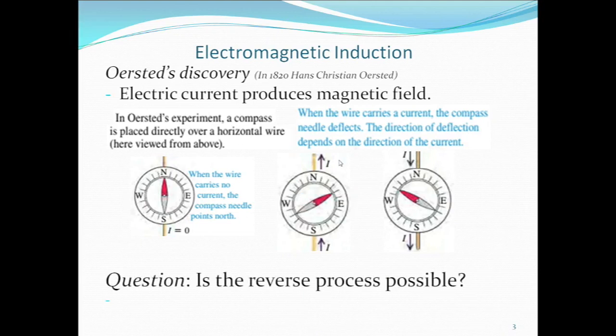The question is: is the reverse process possible? This will take us to our today's discussion. Is it possible for electric current to be produced by a magnetic field?